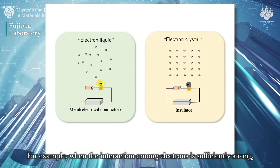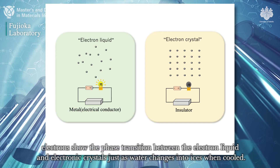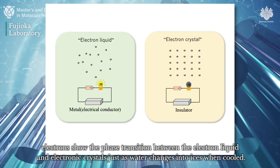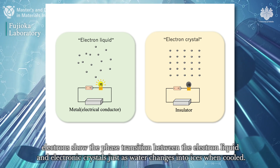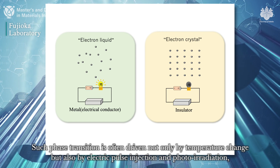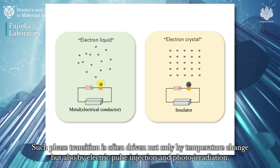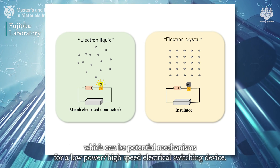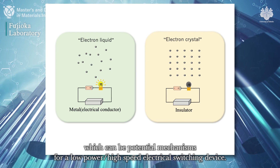For example, when the interaction among electrons is sufficiently strong, electrons show a phase transition between the electron liquid and electronic crystals, just as water changes into ice when cooled. Such phase transitions are often driven not only by temperature change, but also by electric pulse injection and photo irradiation, which can be potential mechanisms for a low-power, high-speed electrical switching device.